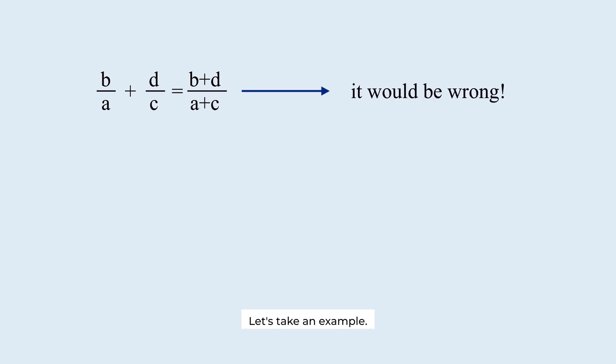Let's take an example. A half plus a half. The actual sum is 1. However, if you add the denominators together and the numerators together, you get 2 over 4, which is a half.